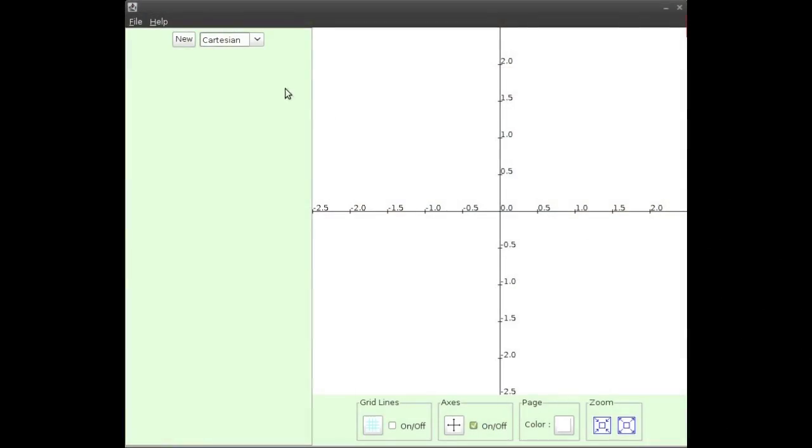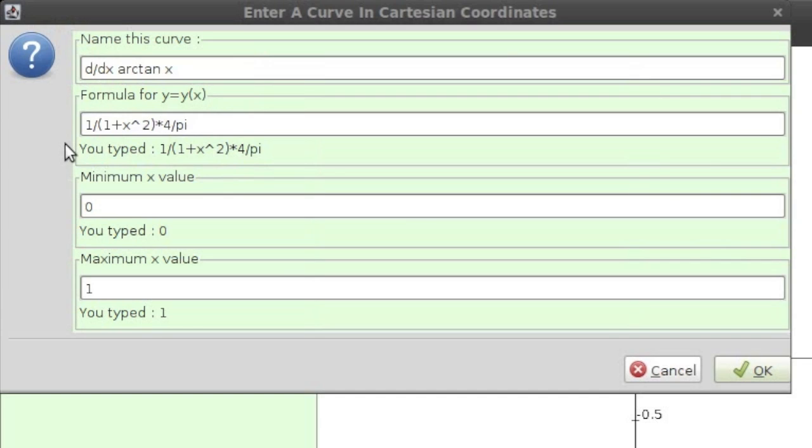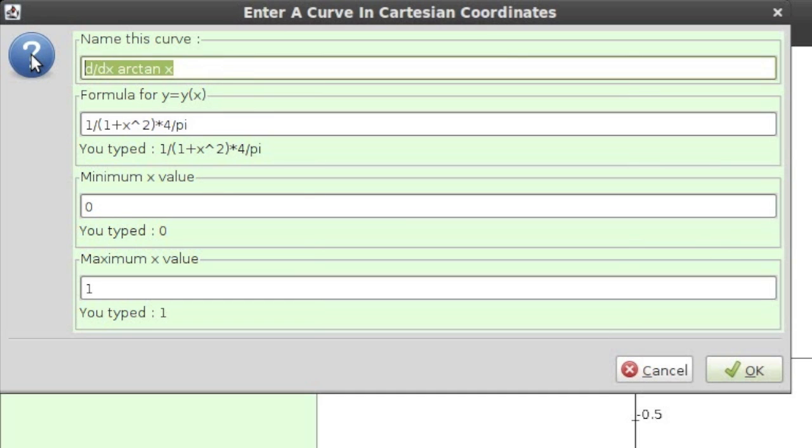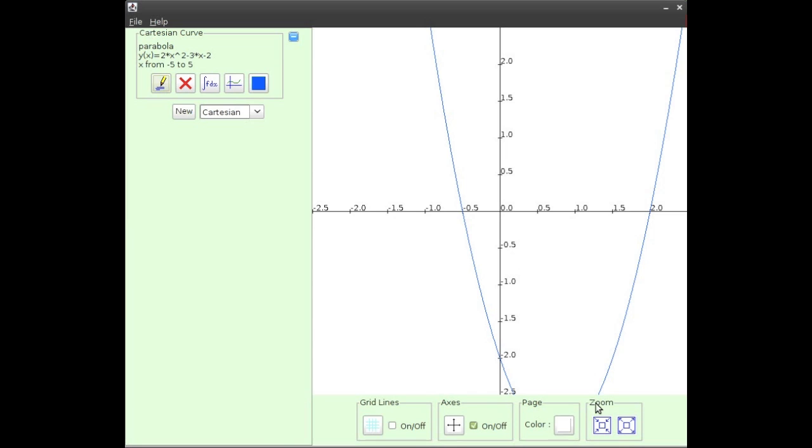I'm going to use some software called GraphPower, which you can get from graphpower.com, to test whether I've drawn the sketch correctly. First, I'll type the equation of the parabola into this box here, 2 times x squared, minus 3 times x, minus 2. We'll put in some bounds for the value of x, say, from minus 5 to 5. And when I click OK, the graph of the parabola appears instantly.